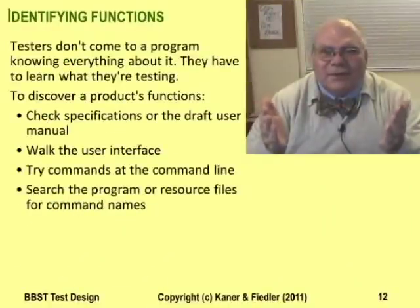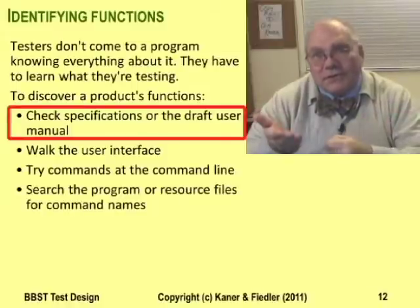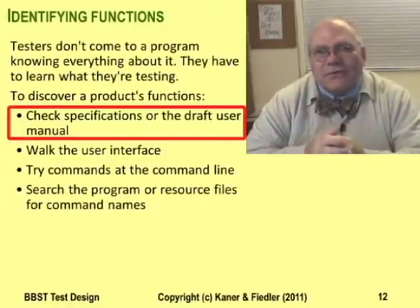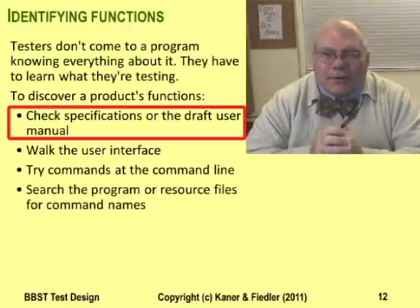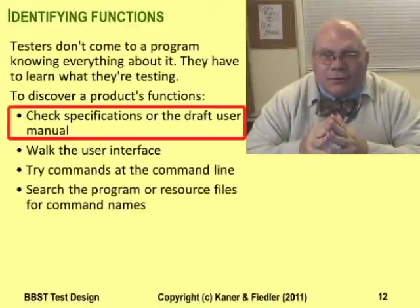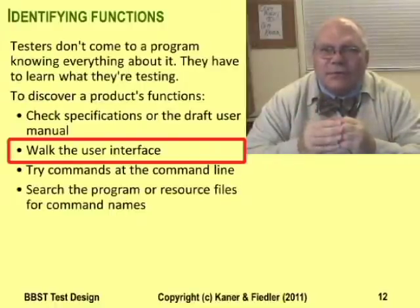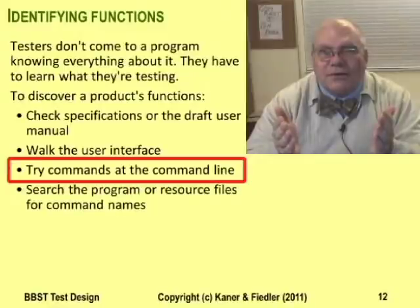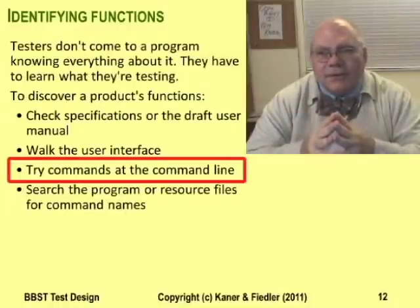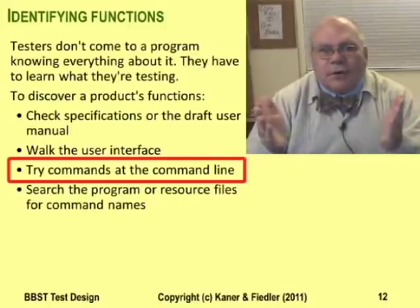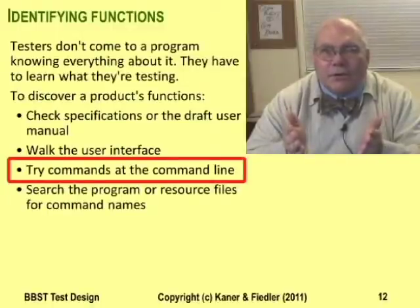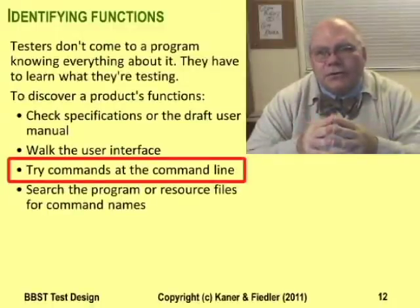So how do testers find all the product's functions? If you have a draft user manual, a specification, or a help system, those are excellent sources for some of the functions. But remarkably many functions go undocumented even when the documentation is intended to be thorough. So you can also walk the user interface — I'll give you an example in a moment. And if you can start the program at the operating system command line, you might find new functions in the command line options. For example, you might be able to set the program into debug mode, which might affect what information you can get and how all the other program's functions work. At the command line, look for different help texts for the program's different modes.